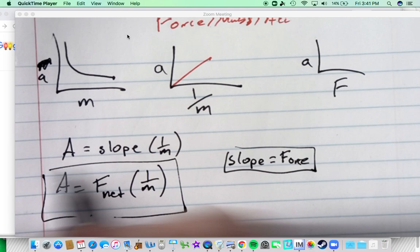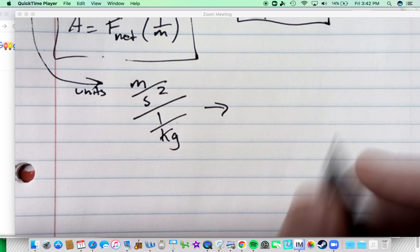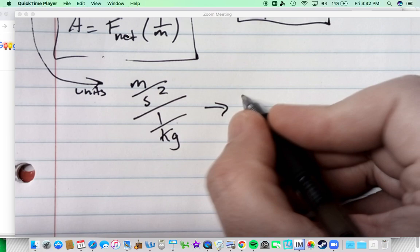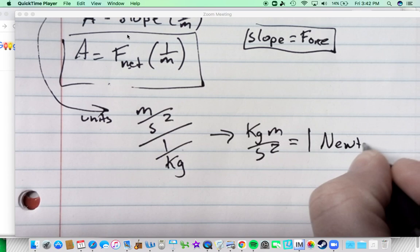So that's kind of our new model. And then I had people, and you can pause this and try it if you want, to find the units of slope. And the units of slope was meters per second squared per, a lot of people made this mistake, not kilograms but one over kilogram. And so a little math would get us to, if you multiply it by the reciprocal, you'll get a kilogram meter per second squared. And since this is the force, we call this, define this as a newton.